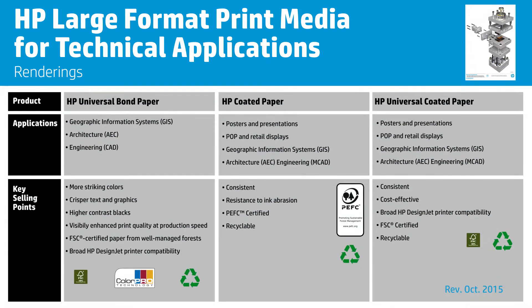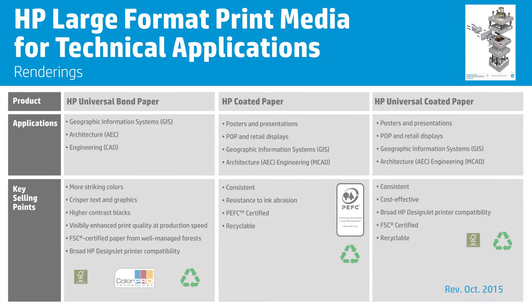Drafts are typically produced on less expensive papers like HP Universal Bond paper or lightweight coated paper like HP Coated or HP Universal Coated paper.